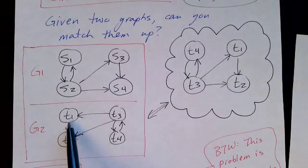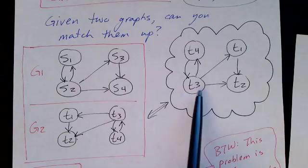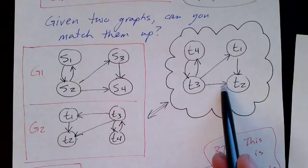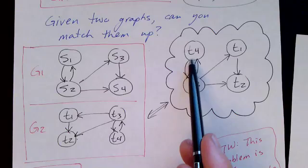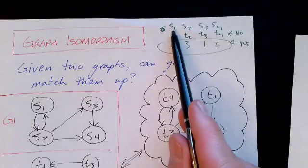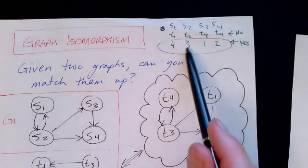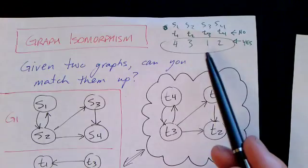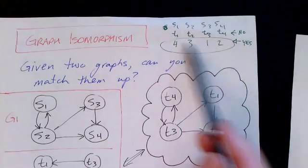And in this case the answer is yes. If we take graph G2 and redraw it, putting T4 above T3 and moving T1 and T2 over to the other side and keeping the edges the same, we see that graph G1 lines up with graph G2. There's a correspondence: S1 lines up with T4, S2 lines up with T3, S3 lines up with T1, and S4 lines up with T2. So that is a solution: 4, 3, 1, 2.